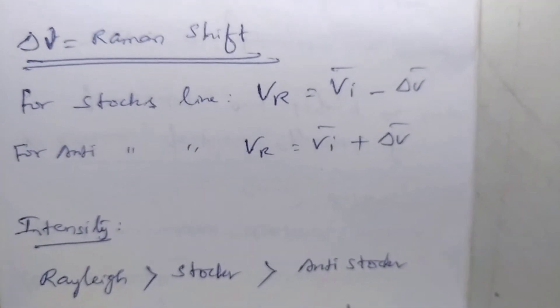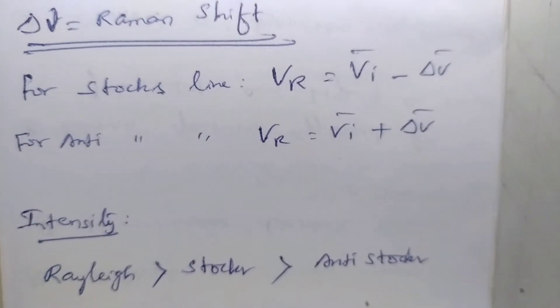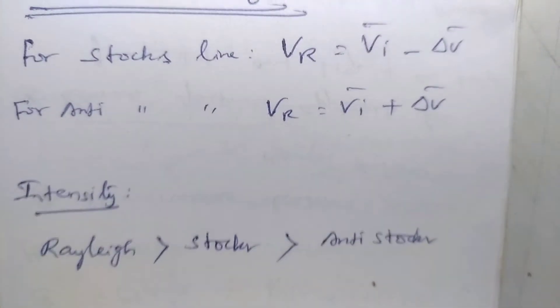In intensity, Rayleigh scattering has more intensity. Anti-Stokes line has less intensity than Stokes line.